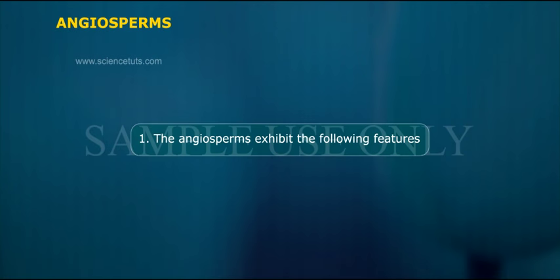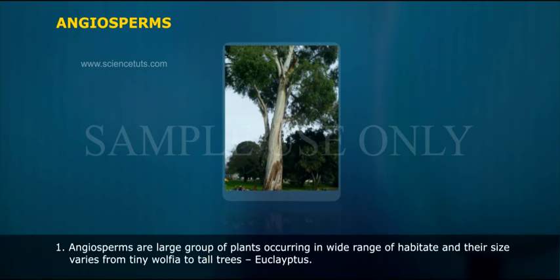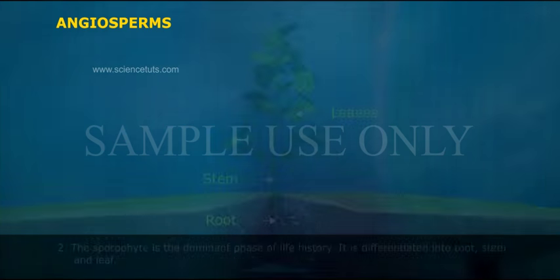The angiosperms exhibit the following features. First, angiosperms are a large group of plants occurring in a wide range of habitats, and their size varies from tiny Wolffia to tall trees like Eucalyptus.